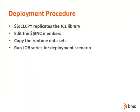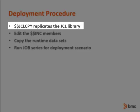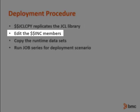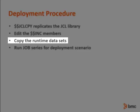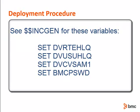After your initial install is done and you want to deploy those products to another environment, begin by using the $JCL CPY job in your JCL dataset to make a copy of the install JCL. This copy will be edited and used for deployment. Edit the $INC include members in the new JCL library and change any values that you need for the new environment. If you have non-shared DASD, use your own processes to copy the runtime datasets to your new environment. For a list of the runtime datasets, look in the $INC GEN member for these variables: Set DVRTEHLQ.